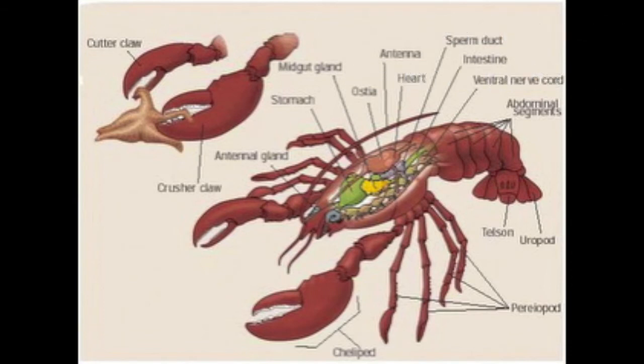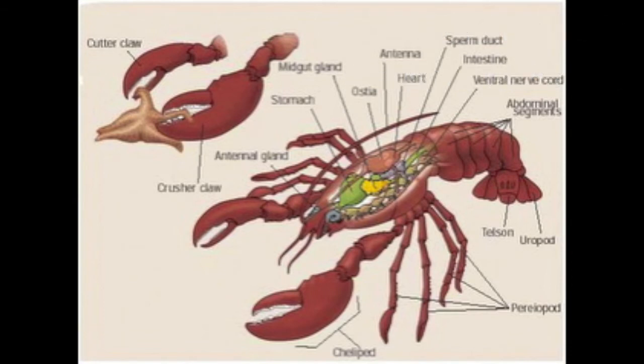Another phylum we're going to talk about is Phylum Arthropoda. These are segmented coelomates with exoskeletons and jointed appendages, such as crabs or lobsters. Arthropods are considered the most successful phylum among invertebrates because they have been able to live in both water and on land, unlike molluscs which are mostly aquatic.